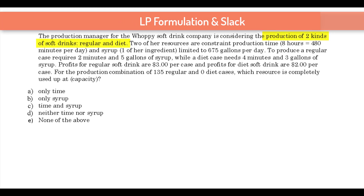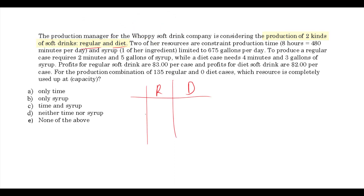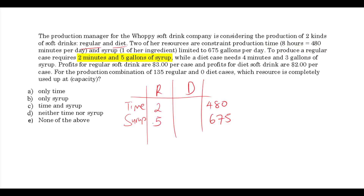In this question, we're looking at producing two types of soft drinks, regular and diet — let's call them R and D. We're looking at two constraints: time, where we have 480 minutes available, and syrup, with 675 gallons available. To produce a regular case requires 2 minutes and 5 gallons of syrup. To produce a diet case, we need 4 minutes and 3 gallons of syrup.